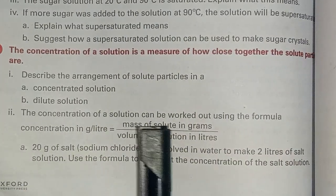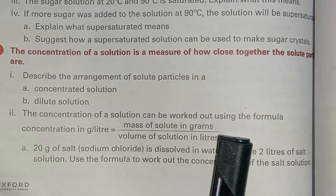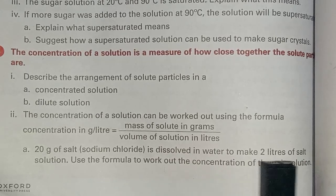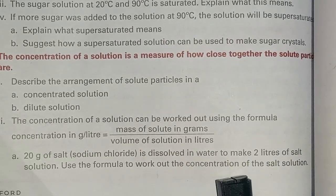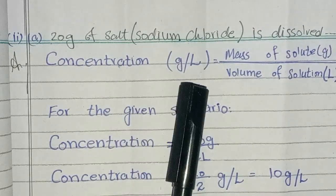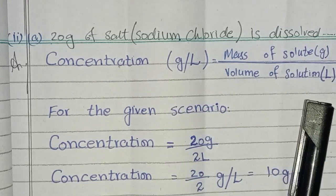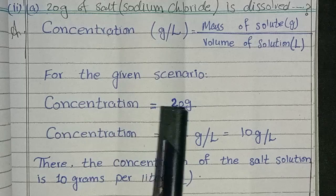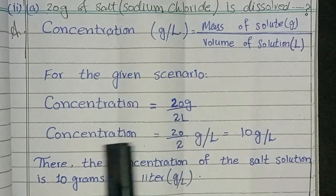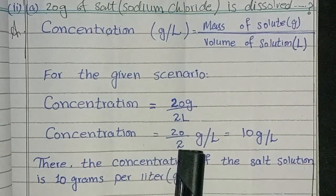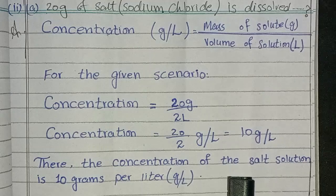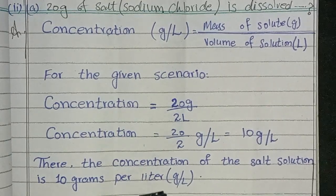Second question: The concentration of a solution can be worked out using the formula. Here a formula is given. Twenty gram of salt (sodium chloride) is dissolved in water to make two liter of salt solution. Use the formula to work out the concentration of the salt solution. Answer: the formula is Concentration (gram per liter) equals Mass of solute in gram divided by Volume of solution in liter. For the given scenario, concentration equals 20 grams divided by 2 liters. After calculation, the answer is: the concentration of the salt solution is 10 grams per liter.